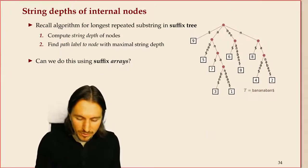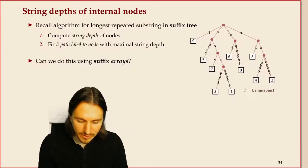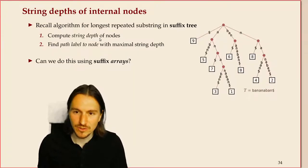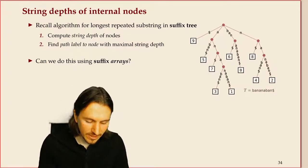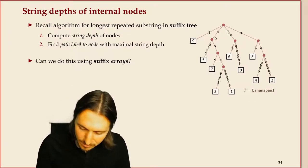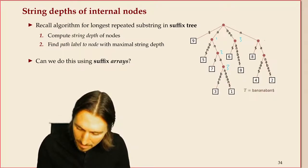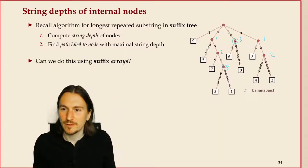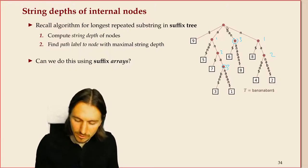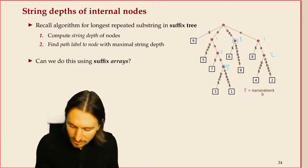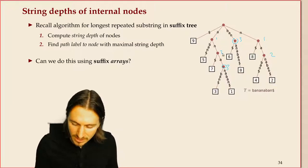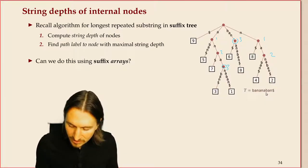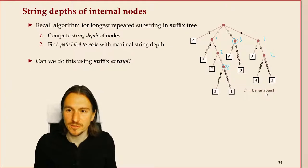The algorithm for finding the longest repeated substring was: compute the string depth of all nodes, then find the internal node with maximal string depth. Let's briefly do this: string depths are 1, 2, 3, 3, 1, 2, so the maximal ones correspond to two maximal repeated substrings in 'bananaband' — 'ban' occurring twice, and 'ana' occurring in an overlapping way. It seems unclear how to replicate this in a suffix array, but if we add another piece of information — the LCP array — we can actually do it.